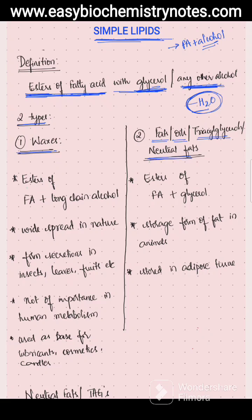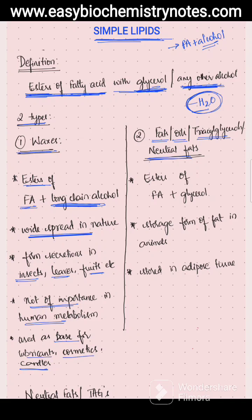Waxes are esters of a fatty acid plus a long chain alcohol — that is, an ester bond is formed between a fatty acid and a long chain alcohol. These are widespread in nature; they form secretions on insects, leaves, fruits, etc. They are not of importance in human metabolism but are used as a base for lubricants, cosmetic preparations, candle preparation, etc.